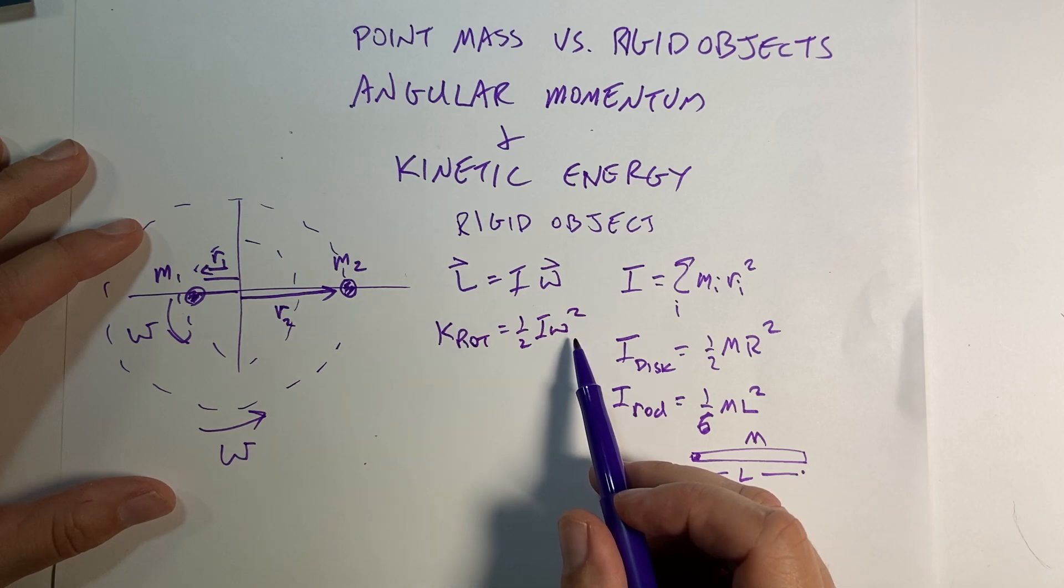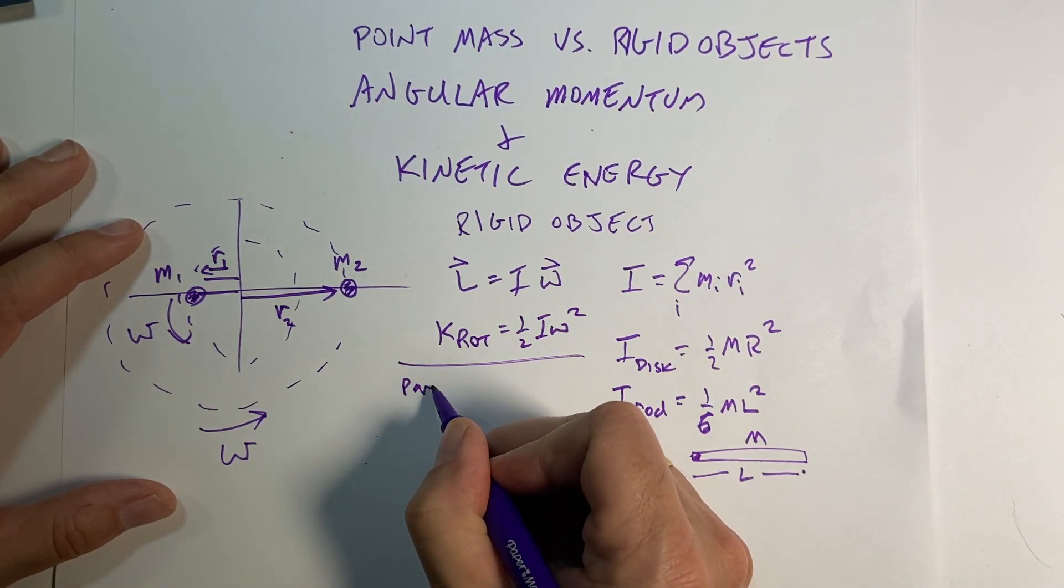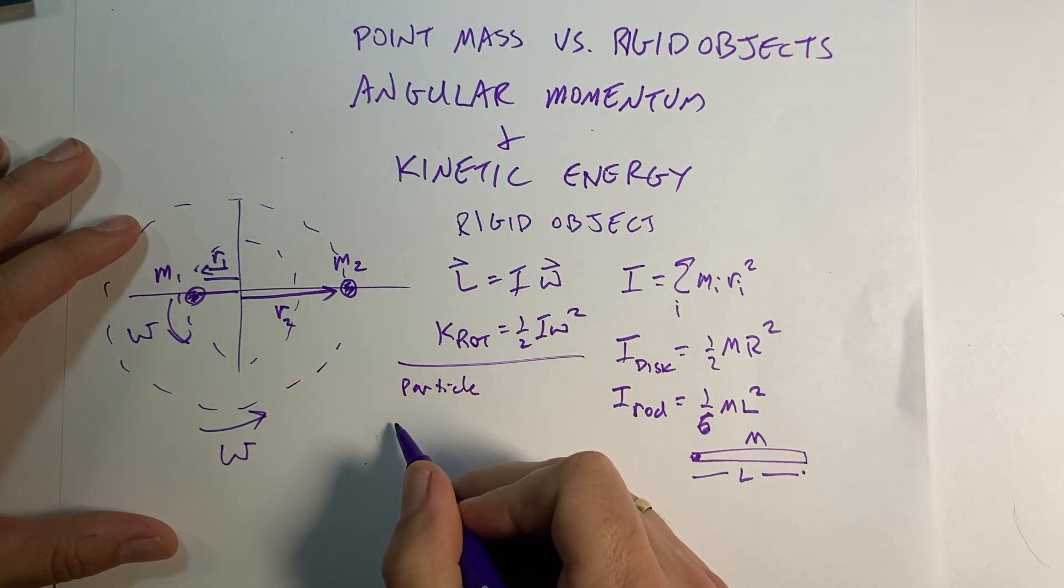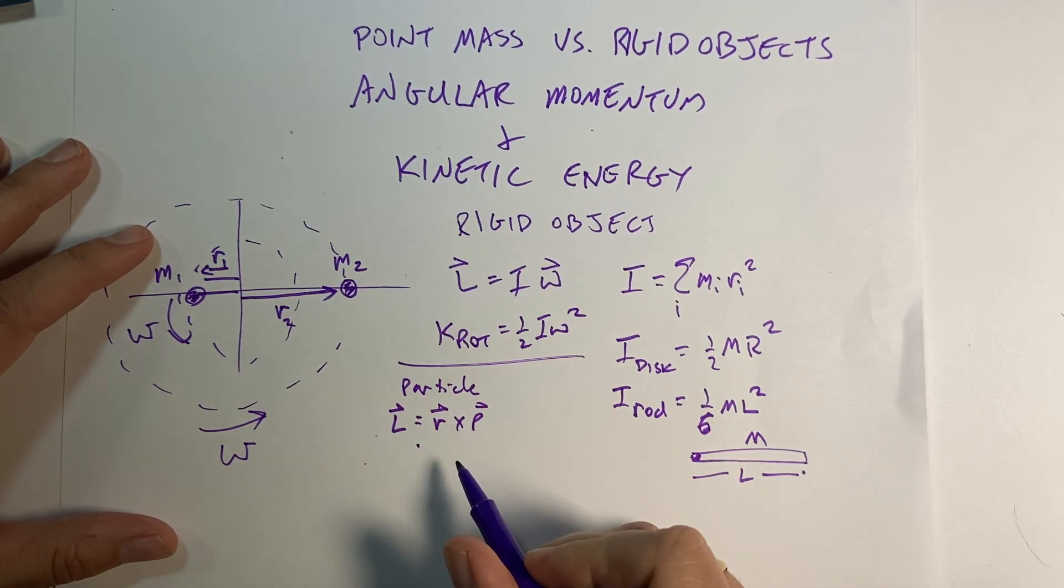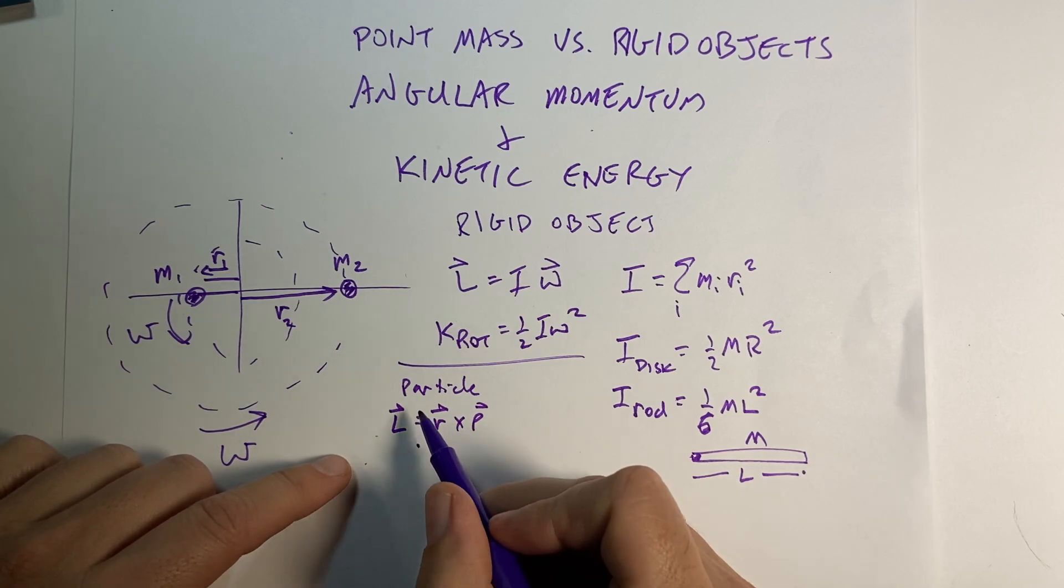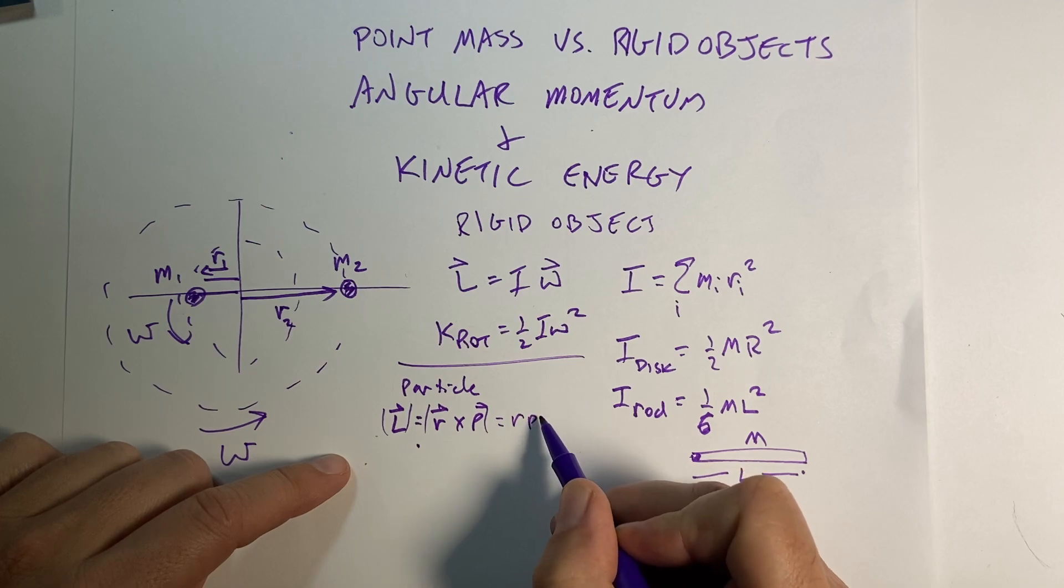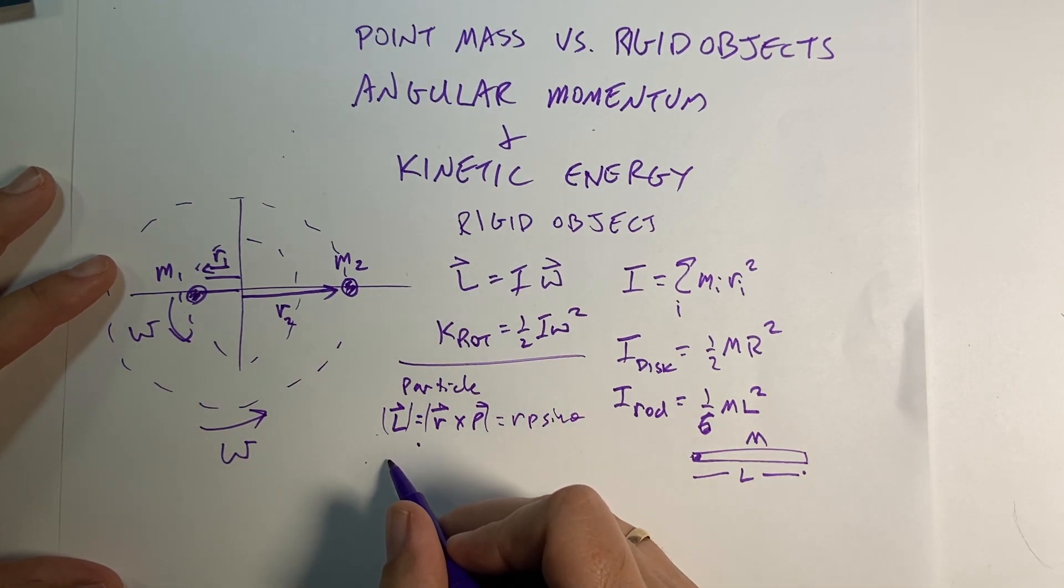So again, that same I and the same omega. And then for a particle, we have the angular momentum is defined as r cross p. So you could write that as just the magnitude is equal to r p sine theta, where theta is the angle between them. And then the kinetic energy is one half m v squared.